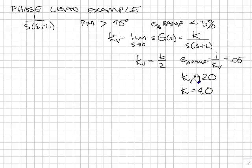Again, this means that if I have this plant right here in unity feedback and I set k equal to 40, that the ramp error will be less than 5%. The next thing I want to do is design to achieve the phase margin.